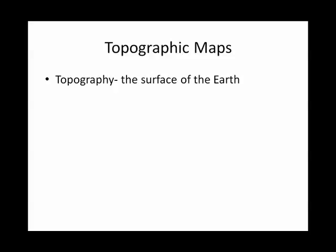They tell you the topography of the surface of the Earth. They do that by means of little brown lines called contour lines, and they are lines of equal elevation.